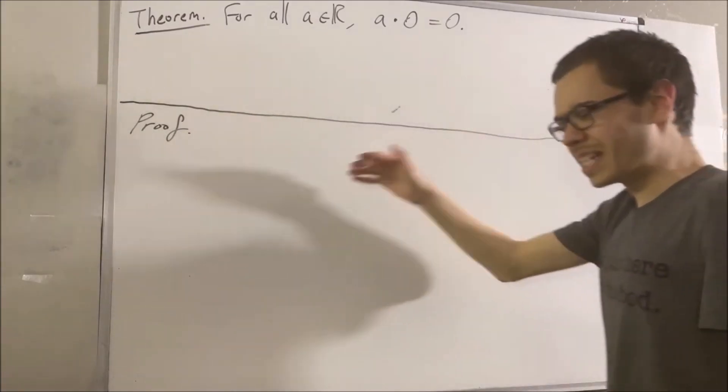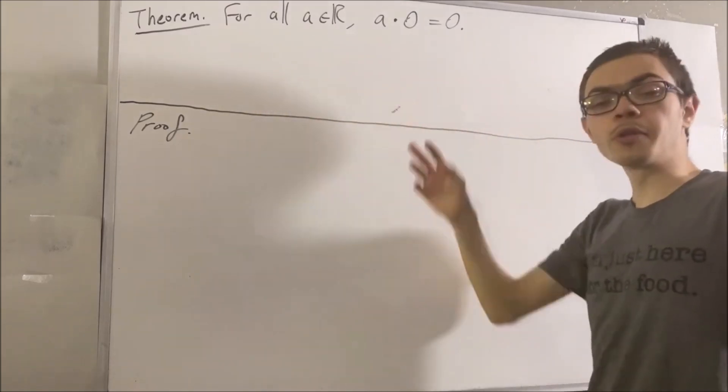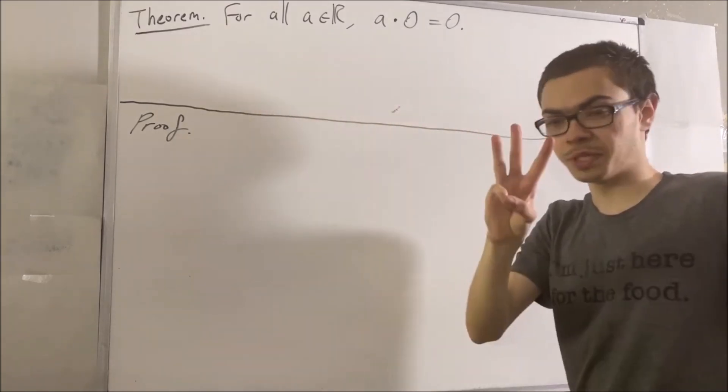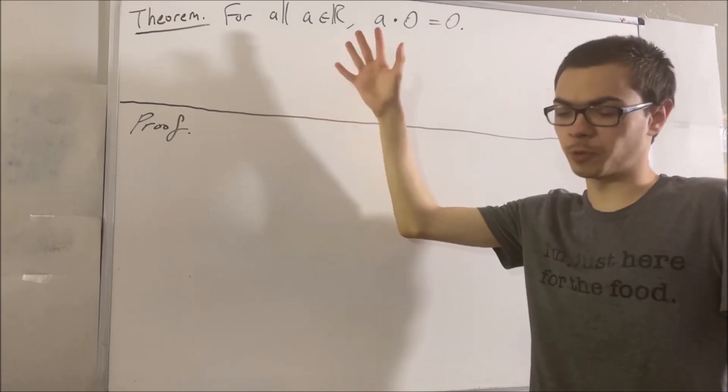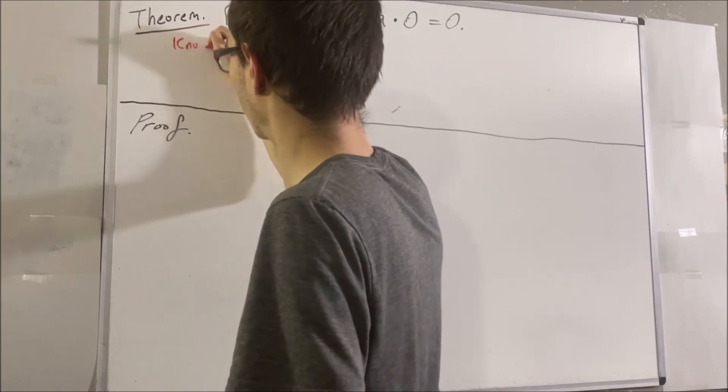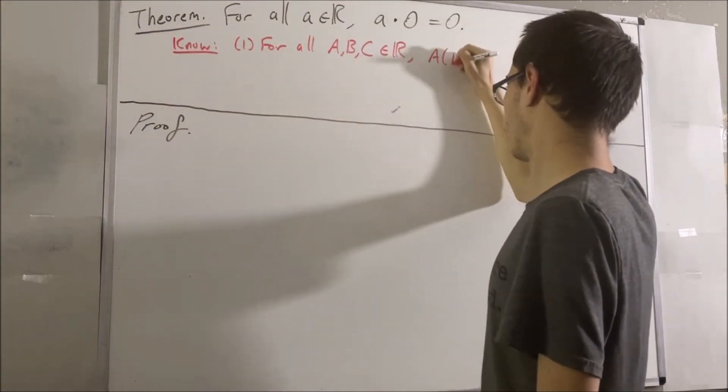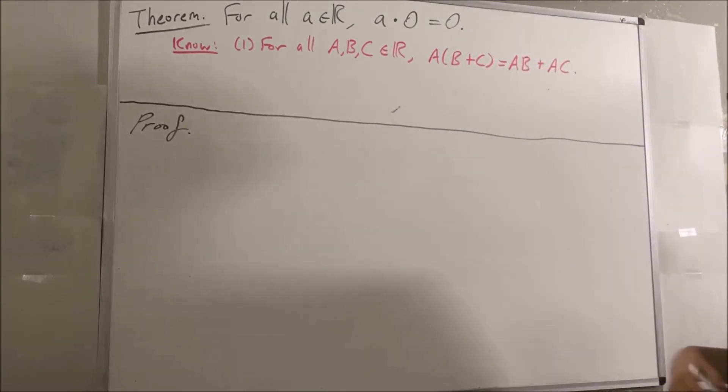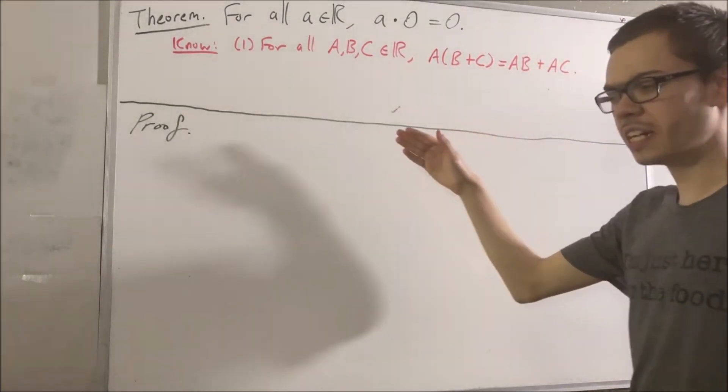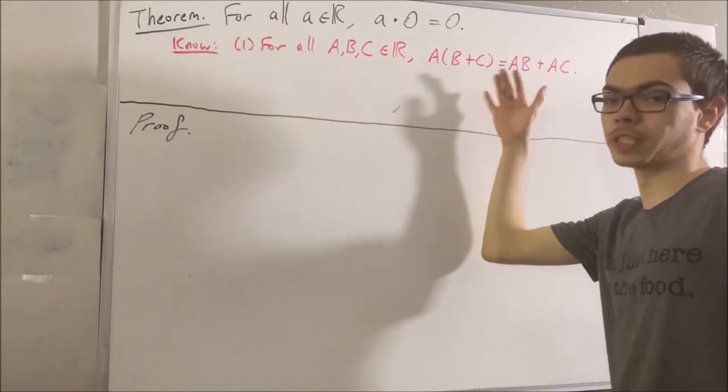Okay, now we're basing our proof off of the field properties of the real numbers, and there's three facts that we're going to use which come from the field properties of the real numbers. The first is the distributive law. The second fact that we're going to use is for every real number a, a plus zero is equal to a.